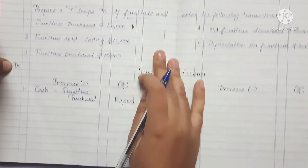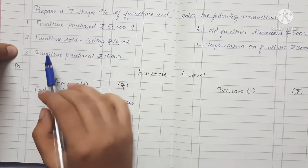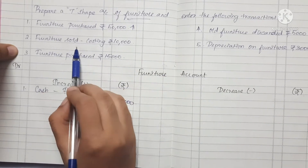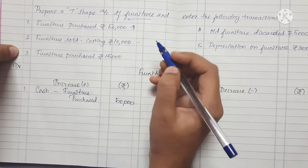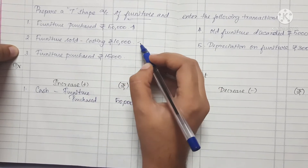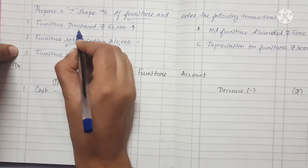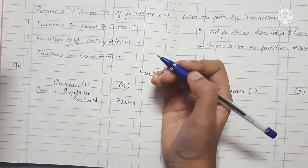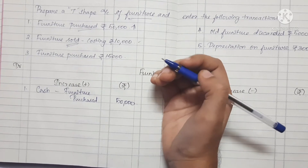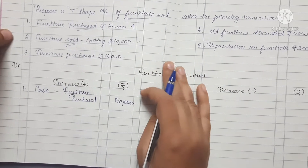Next, Furniture Sold costing Rs. 10,000. When we sell furniture, the asset decreases, so this goes on the Credit side.